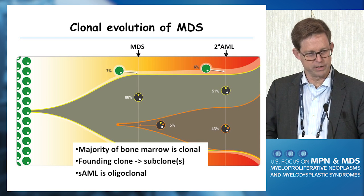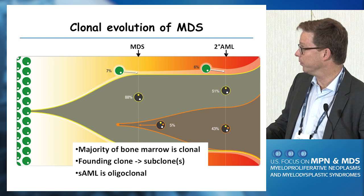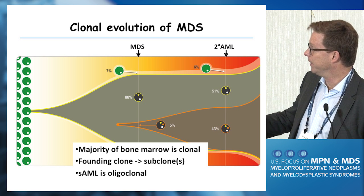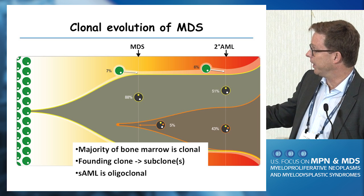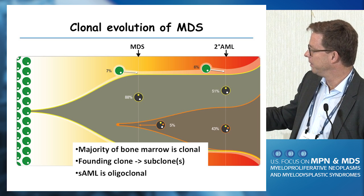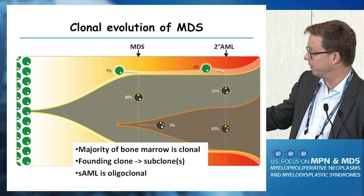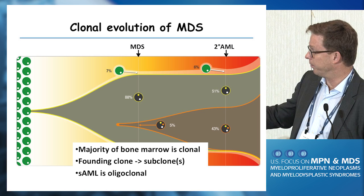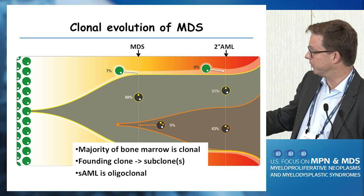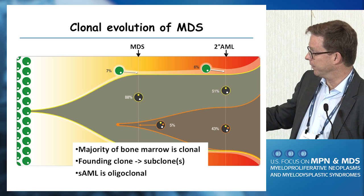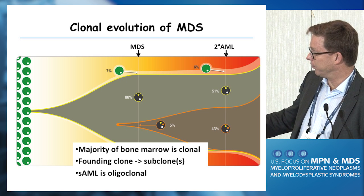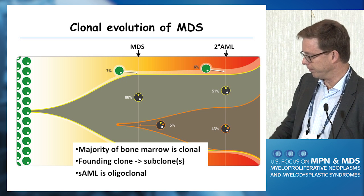This can be summarized again: patients diagnosed with MDS at that stage already have a highly clonal bone marrow. A single cell at some point was copied, cloned, and carried forward with all these mutations. And then typically subclones emerge, again by cloning a single cell, acquiring additional mutations and moving forward.